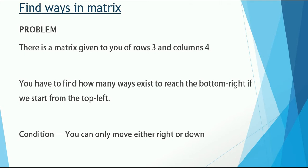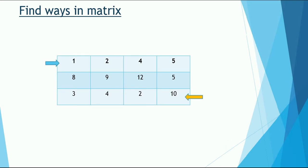Here is the matrix. As you can see, this is the top-left corner, filled with random integers — those are of trivial significance to our solution. Just focus on this particular cell: you are here at the top-left and you have to reach the bottom-right corner. In how many ways can you do it? That's what we need to find out using dynamic programming.